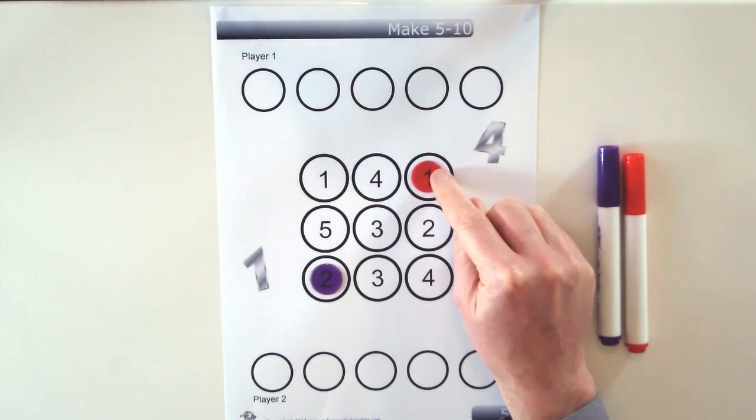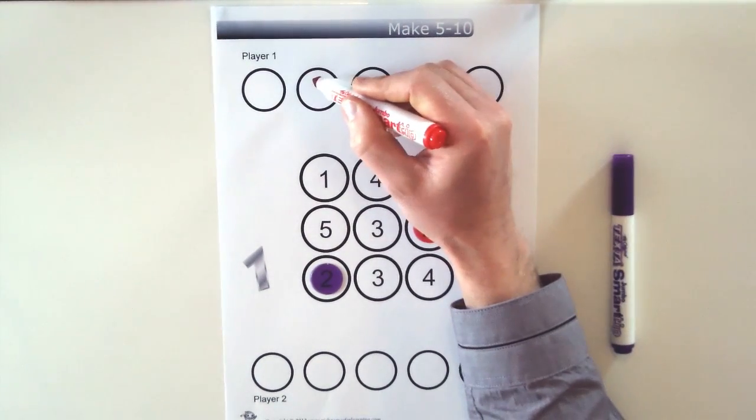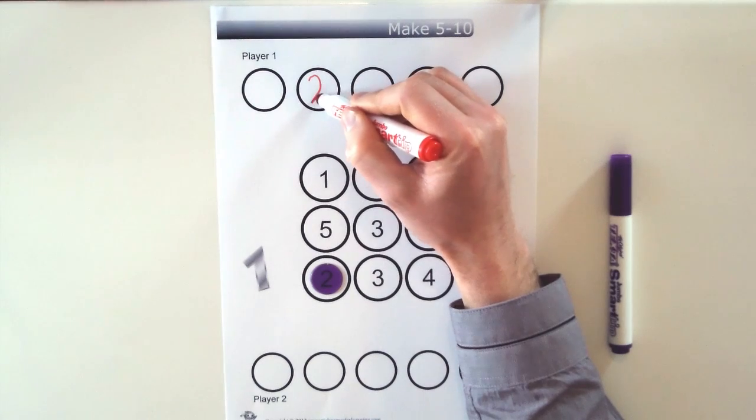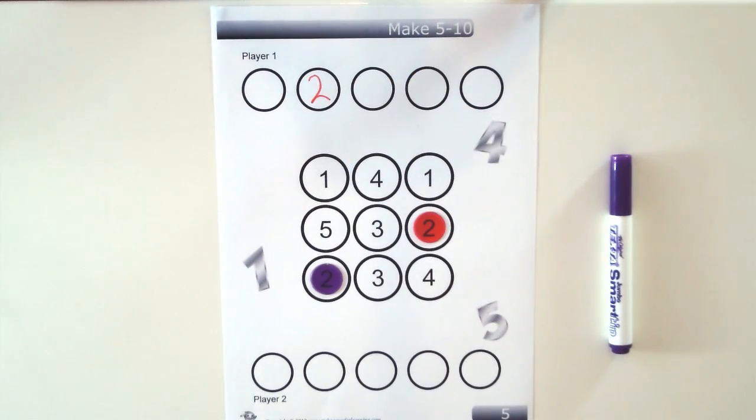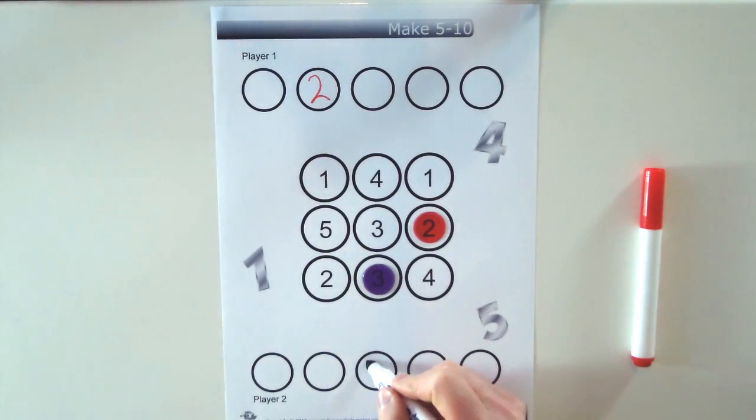So red is going to go first, they move to the 2 and put a 2 in its correct order. Right there. It's purple's turn and they'll move to the 3, put the 3 there.